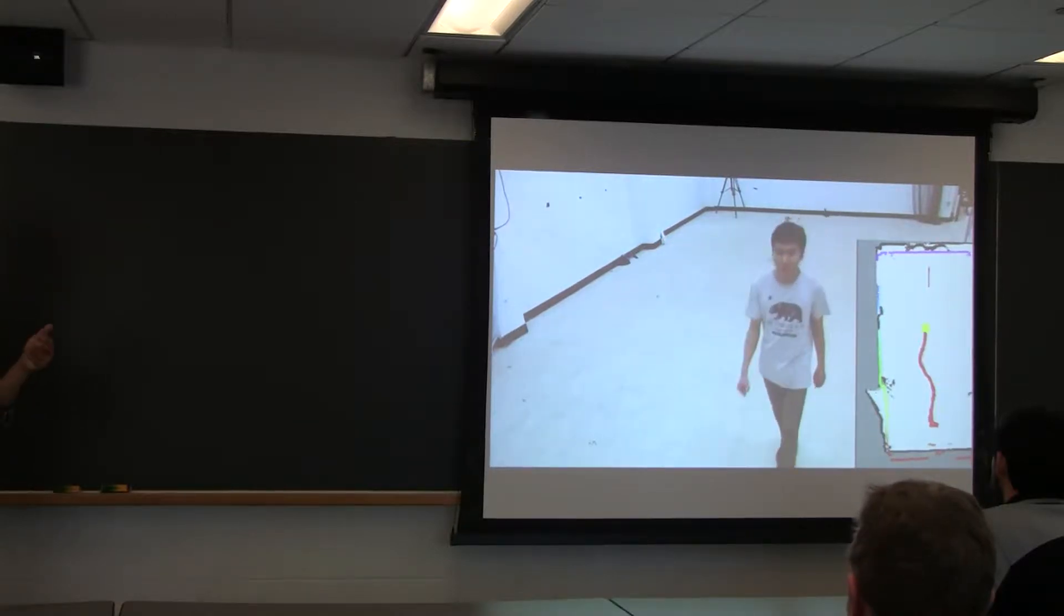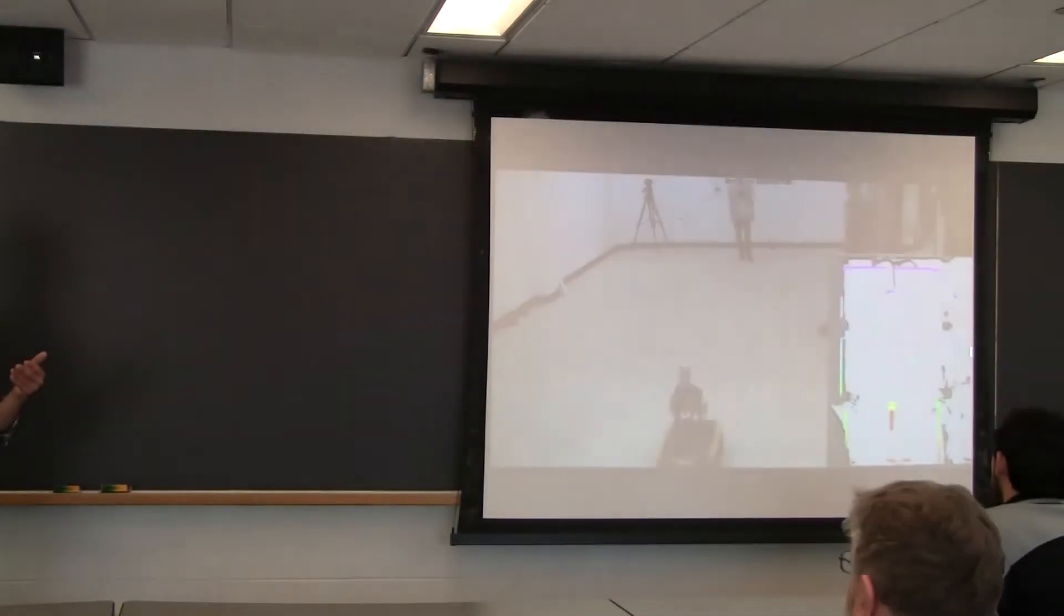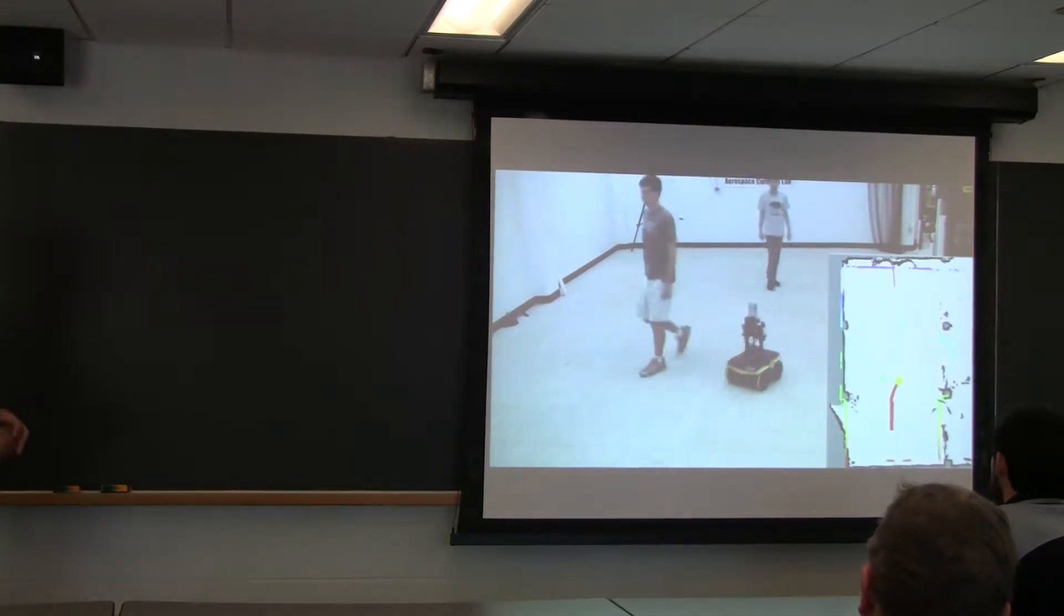It's taking in as input the position and velocity of the robot and outputting a velocity trajectory. So you can see it does pretty well with dynamic obstacles.